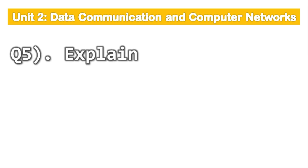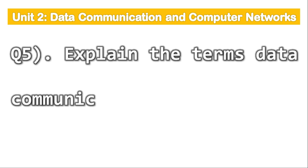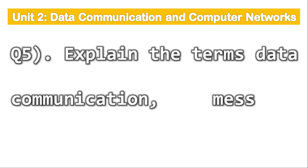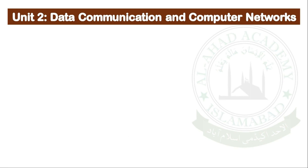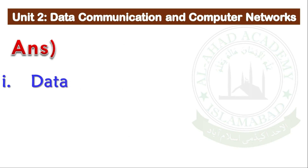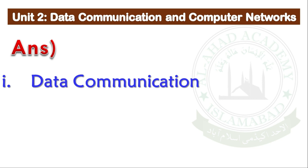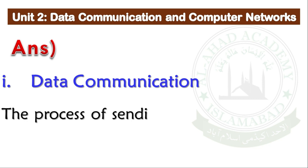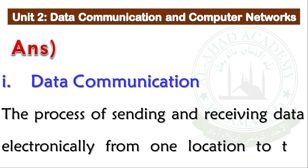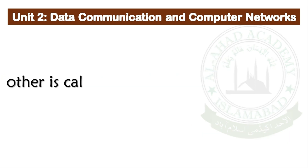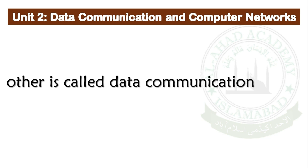Question number 5: Explain the terms data communication, message, encoder, and decoder. Data communication: The process of sending and receiving data electronically from one location to the other is called data communication.